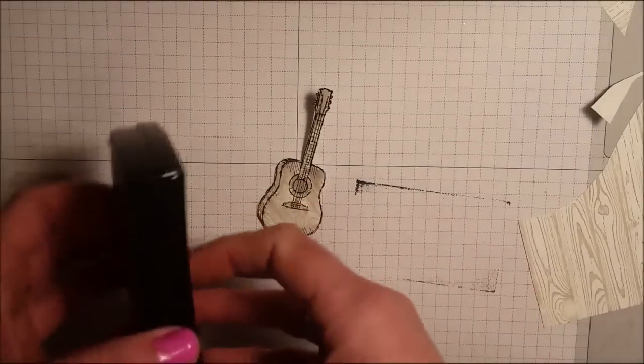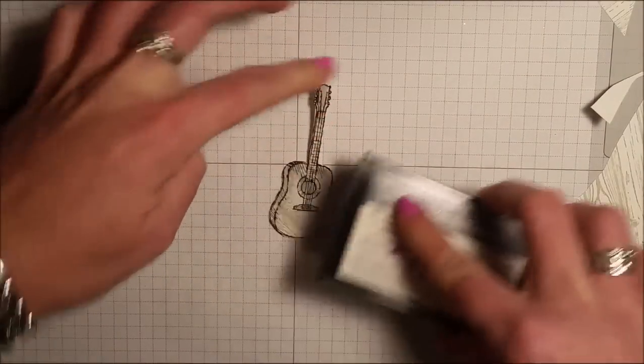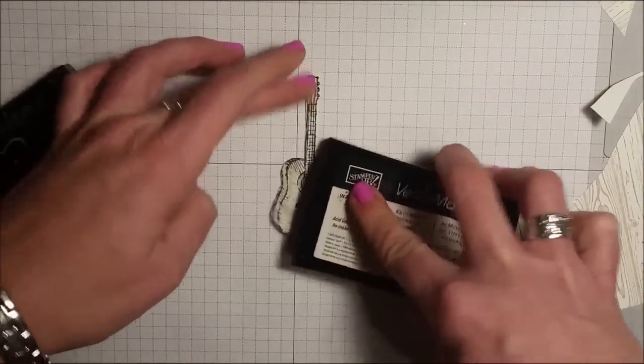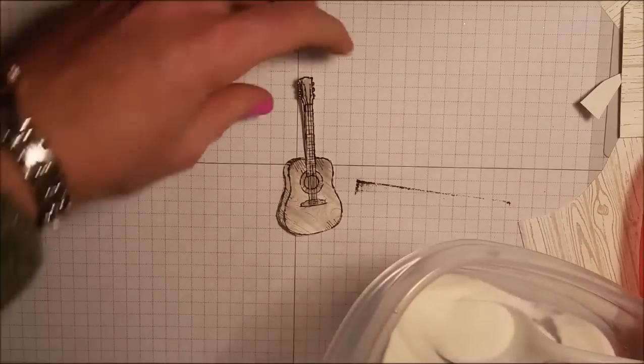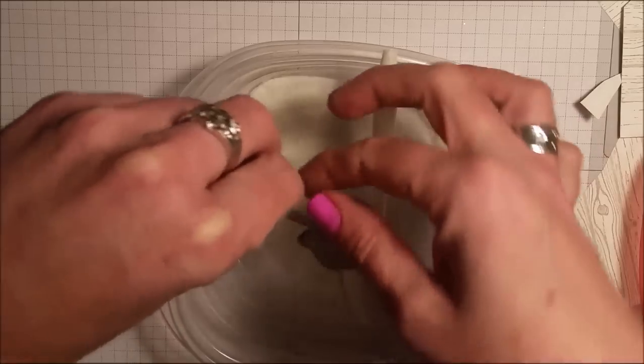I want to emboss this guitar just to give it some clear shine and shimmer and a little dimension. So I'm just inking the whole piece up using my versamark, taking my clear embossing powder and covering the whole piece.